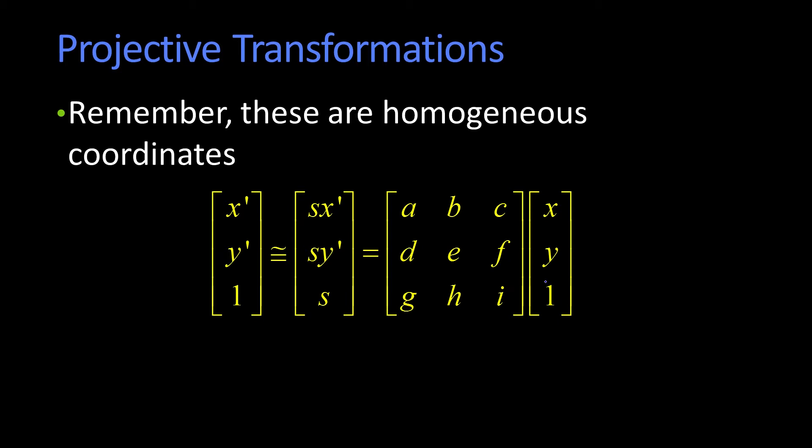So it's a full homogeneous coordinate system which will go from the homogeneous x, y, 1 through a linear operation to a scaled version of the new x prime, y prime.